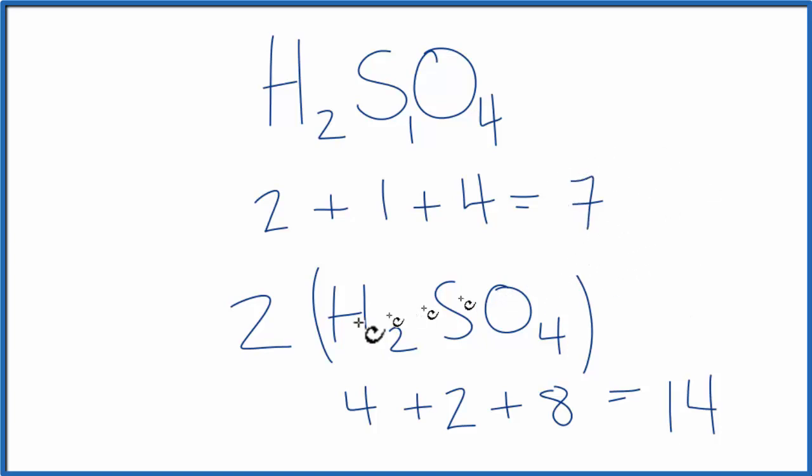Which is just double the seven here. And that makes sense because we put the two in front of the H2SO4. So the little numbers, these are called subscripts. They tell you how many of each one of these elements there are. The big numbers, when you balance equations, those are coefficients and they apply to the whole molecule.